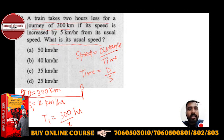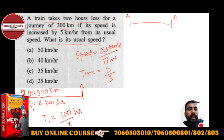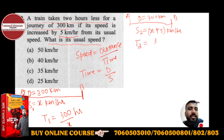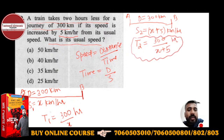This was the first condition — a train takes 2 hours less. Now the situation is again the same: point A to point B, distance is 300 km. But now the speed has increased. The new speed S2 is 5 km per hour more — so it becomes x plus 5. So T2 equals 300 upon x plus 5.